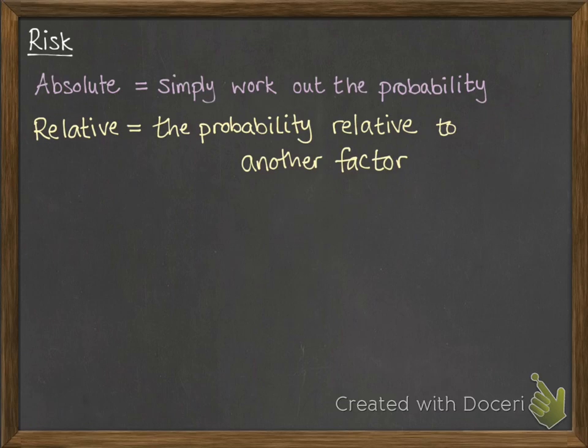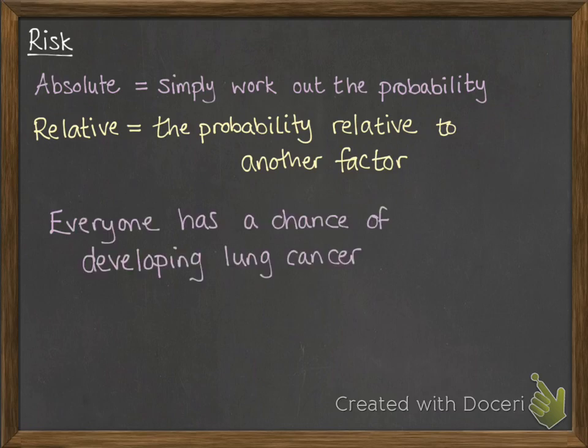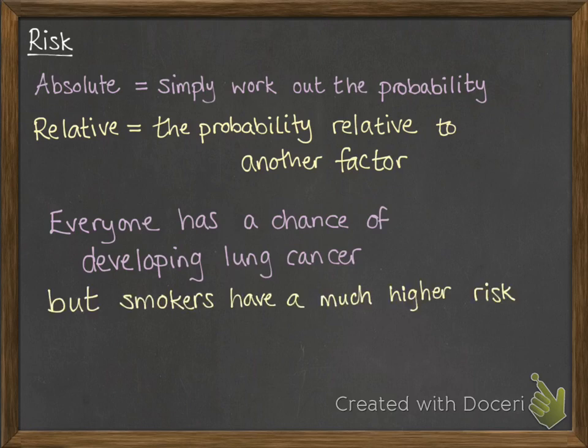Relative risk is when we work out the probability of that happening relative to another factor, and it's normally something that we would consider that would make the chances of this bad thing happening worse. For example, you might think about this with there's a risk that everyone has of developing lung cancer, but smokers have a much higher risk. So you could work out the relative risk for smokers to work out how much more likely they are to develop lung cancer than non-smokers.